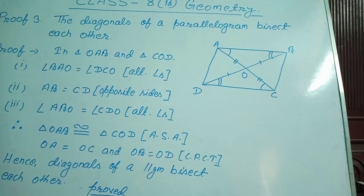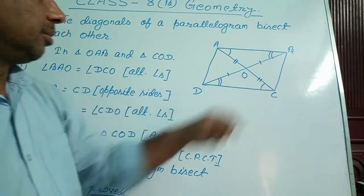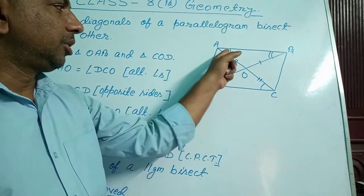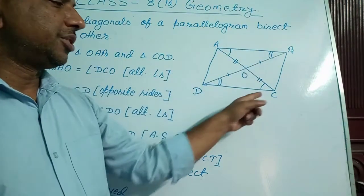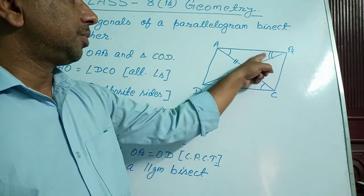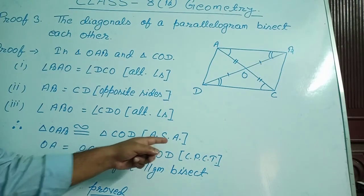We need three conditions to prove these two triangles are congruent. First condition: angle BAO equal to angle DCO, because these two are alternate angles — opposite sides of a parallelogram are parallel, therefore these are alternate angles. Second condition: AB equal to CD, as these are opposite sides of a parallelogram and opposite sides are equal. Third condition: angle ABO equal to angle CDO — these two are also alternate angles. On the basis of these three conditions, triangle OAB is congruent to triangle COD by the ASA axiom of congruency.